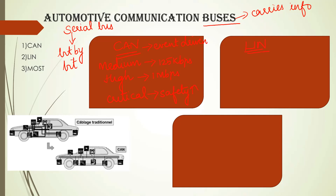Next is LIN — Local Interconnect Network. This is used in low-speed applications. The speed it supports is up to 20 kbps. LIN is used in non-critical applications like your entertainment, fan control, and mirror control. All these non-critical applications can use LIN. One important feature of LIN is that it is a single master, multiple slave protocol — you have one master and multiple slaves. The master decides which slave will connect to the bus.